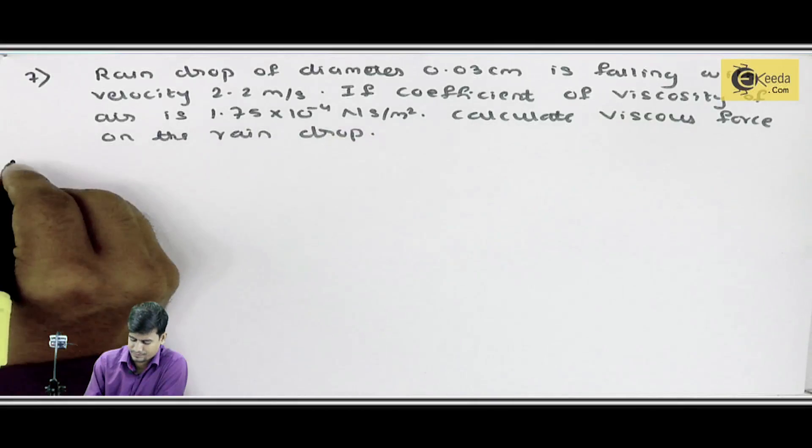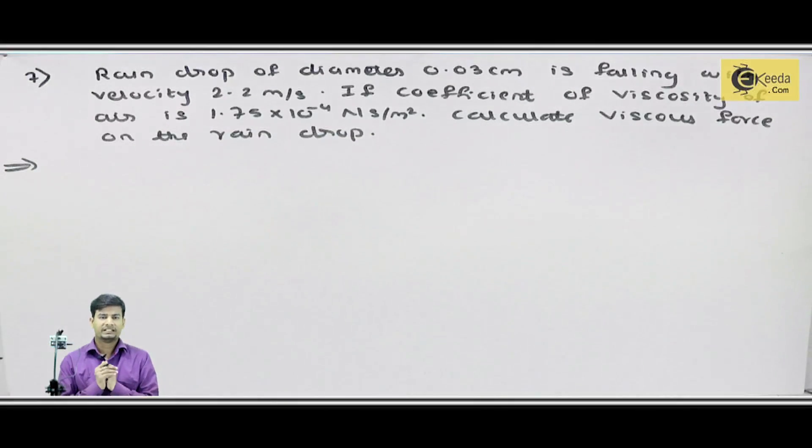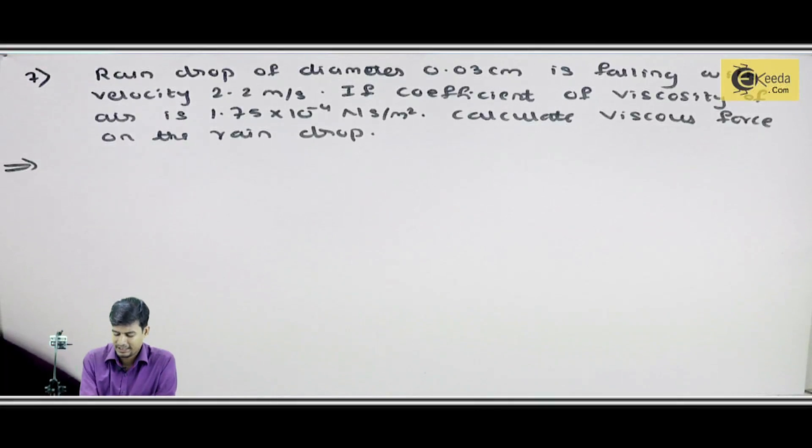So, this is given terms. Raindrop of diameter means raindrop of diameter is 0.03 centimeter. Next is falling with velocity, so 2.2 meter per second. If coefficient of viscosity of air is 1.75 into 10 raise to power minus 4. Means, mujhe kya diya hai? Coefficient of viscosity means eta mujhe given hai 1.75 into 10 raise to power minus 4 newton second per meter square.